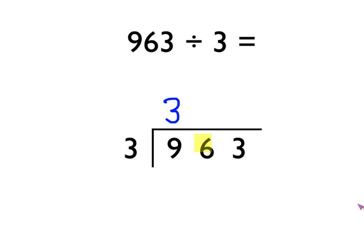Then we look at the next number across, that's this 6, and we ask ourselves: how many times does 3 go into 6? Well, it goes in twice — two 3s are 6. And then finally we look at this 3, and we ask ourselves: how many times does 3 go into 3? Well, just once. So we put the 1 up there, and the answer to our question is 321.